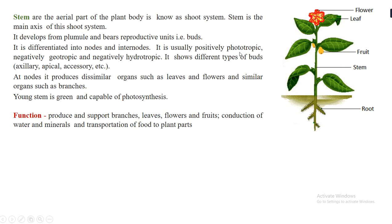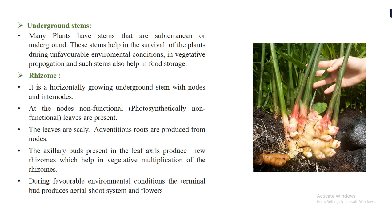Stems are positively phototropic — they grow towards sunlight — and negatively geotropic and negatively hydrotropic — they do not grow towards the soil or water body. Stems also show different buds: axillary bud, apical bud, and accessory bud. The main functions of the stem are to provide support, bear branches, leaves, flowers, and fruits, and to conduct water and minerals through the vascular bundles (xylem and phloem).